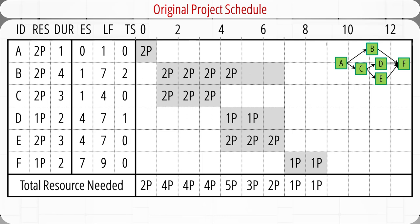Here the same project information is shown in a table format. Activity IDs, the number of programmers needed, durations, early start, late finish, and total slacks are listed in the first six columns. Activity A lasts for one week — two programmers, shown as 2P. Activity B has a duration of 4 weeks and a slack of 2 weeks, so six cells are used: the first four require two programmers, and the last two are just slack. The bottom row shows the total number of programmers needed for each week: starting with two, going up to four and five, then down to three, two, and finally one.